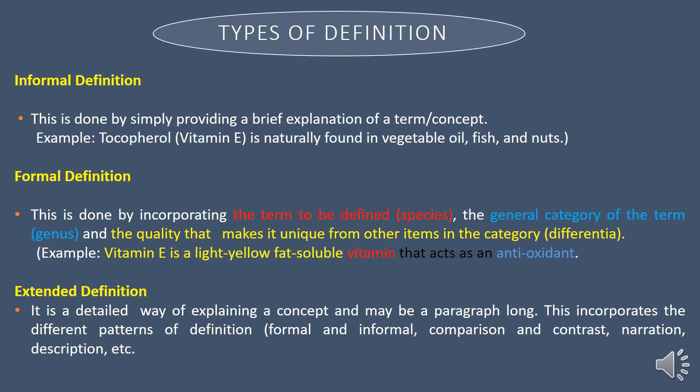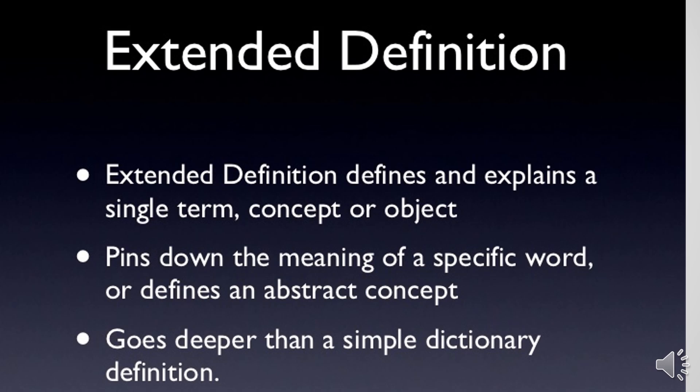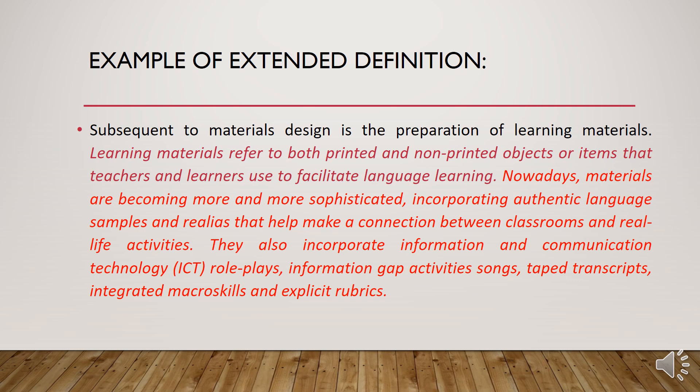Stepping up further, extended definition is more complicated because it is a combination of informal and formal definition. It is a detailed way of explaining a concept and may be a paragraph long. This incorporates different patterns of definition that include formal and informal, comparison and contrast, narration and description, and others. Extended definition defines and explains a single term, concept, or object. It pins down the meaning of a specific word or defines an abstract concept. Lastly, it goes deeper than a simple dictionary definition. Here is a paragraph showing an example of an extended definition.